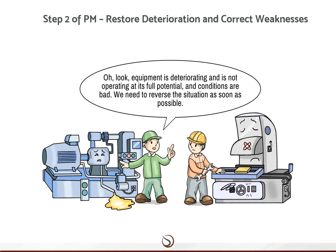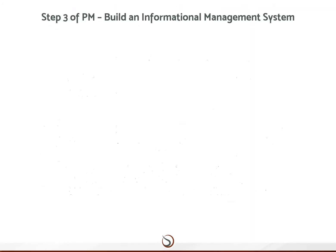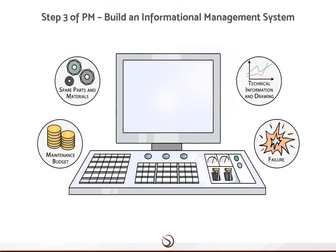The third step of Planned Maintenance is about building an information management system. In process industries, an enormous variety of equipment needs maintenance, and different processes require different maintenance regimes. Managing this colossal amount of information manually is impossible.